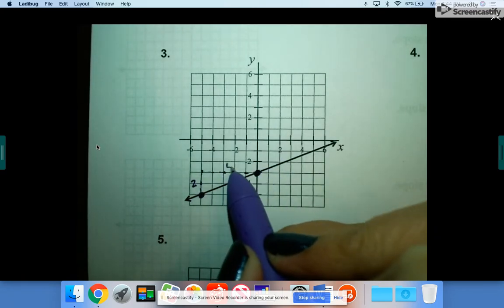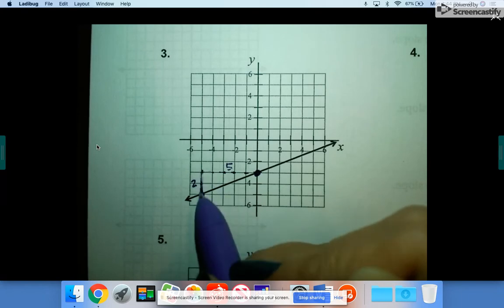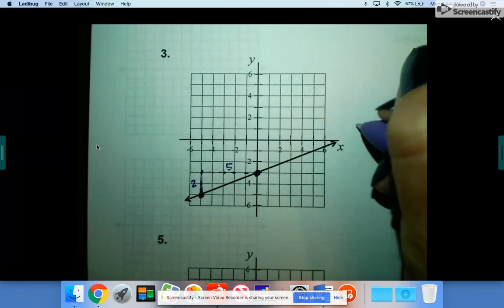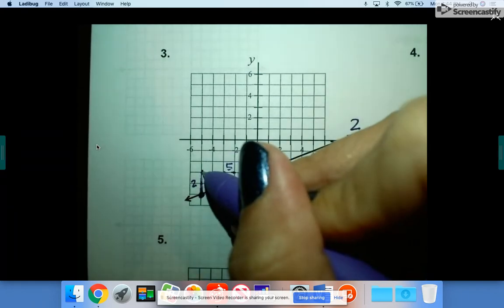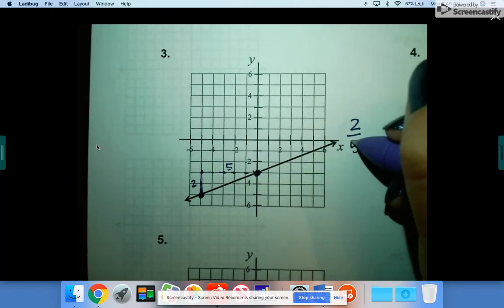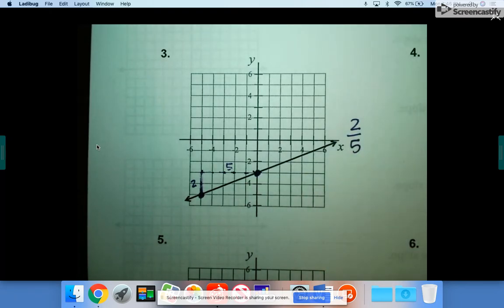So remember, you always put how many you rise on the top of your fraction. And then how many you run goes on the bottom of your fraction. So two-fifths and two-fifths does not simplify, so you're done. Slope is two-fifths.